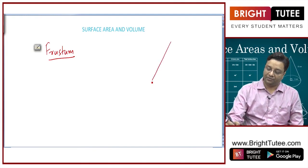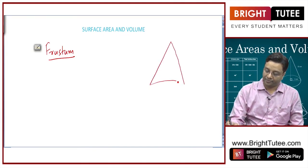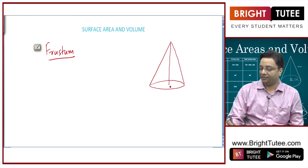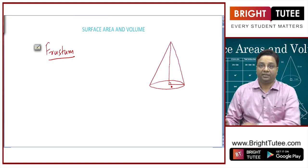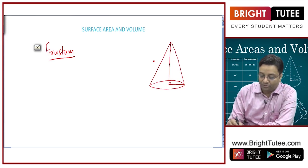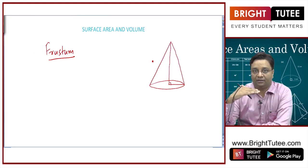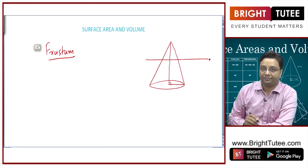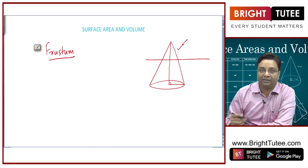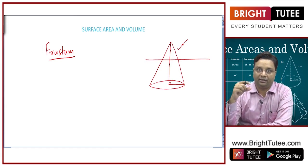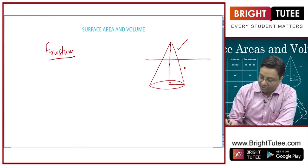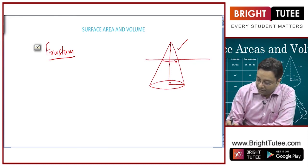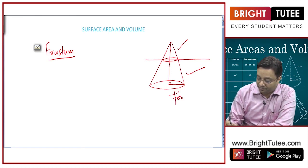What is a frustum? Let us say you have got this cone — this is a right circular cone. If I cut this cone with a horizontal plane, let us say I cut it from here. The upper part is also a cone — a smaller cone. If you remove this smaller cone, you will be left with the bottom part. This part is known as frustum.